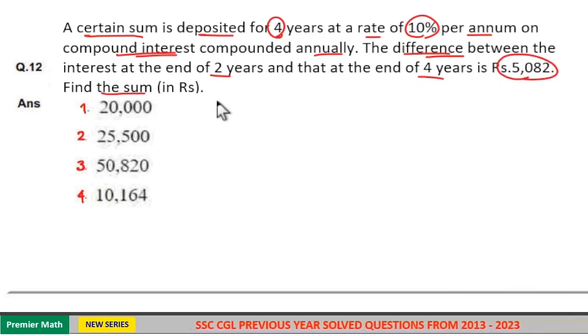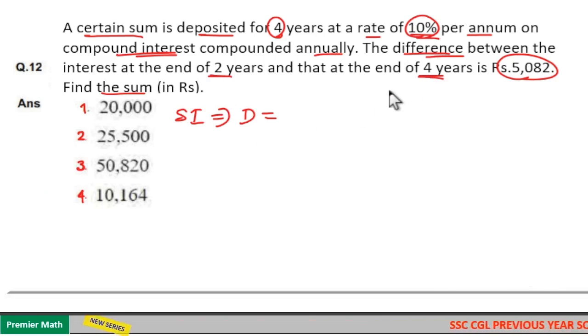Here you can solve it in two methods. If you go for rough calculation, that is an exam perspective, just calculate the simple interest difference for 4 year and 2 year. Here interest is 10% per annum. That is for 1 year it is 10%, so 4 year it is 40%. For 2 year it is 20%. So 40 minus 20 is equal to 20%. This is simple interest difference.